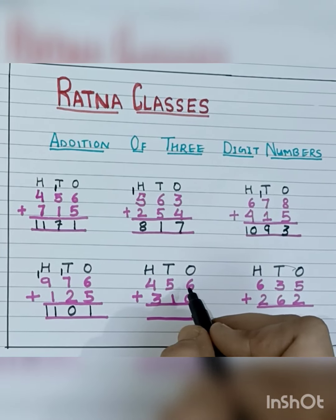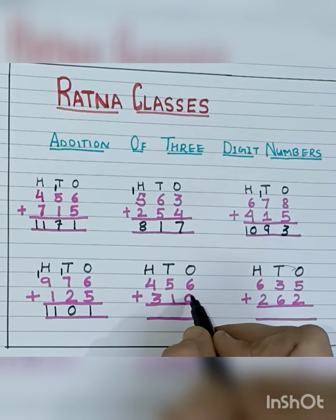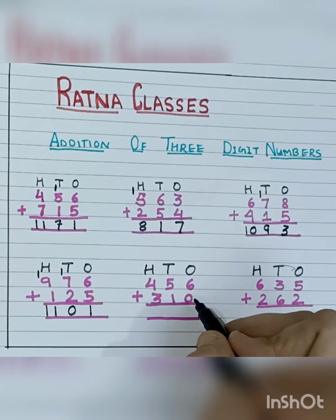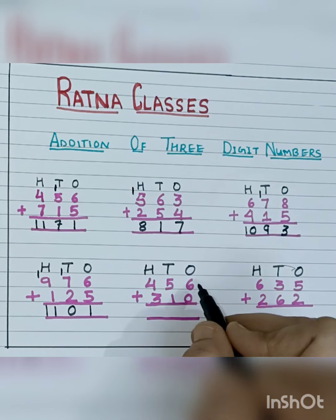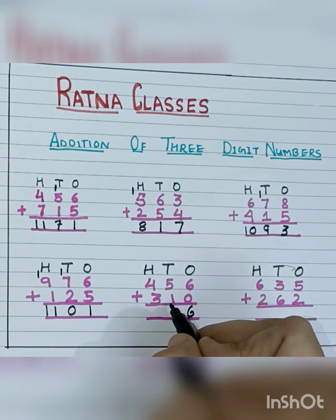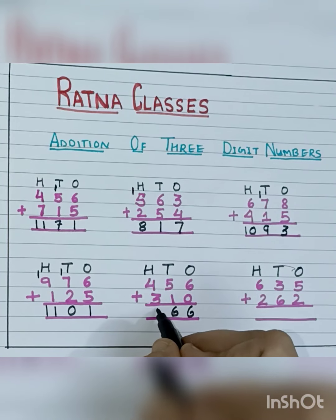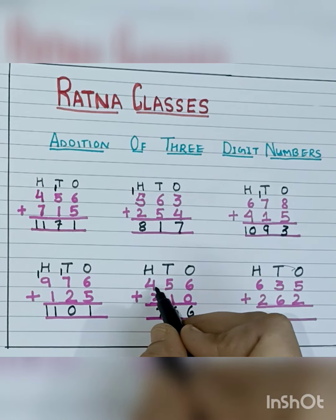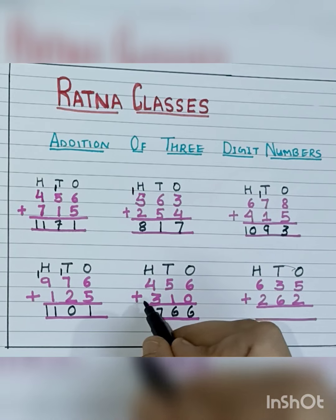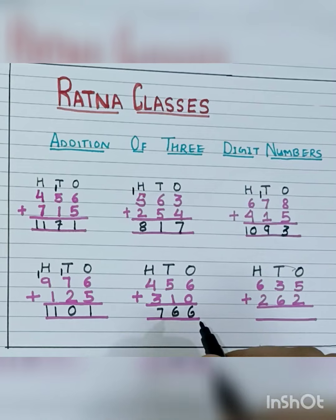Let's come to the next sum, that is 456 plus 310. 6 plus 0 means nothing changes, so 6 is our answer. Then 5 plus 1 is 6. And 4 plus 3 is 7. So 456 plus 310 equals 766.